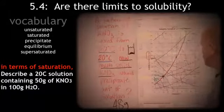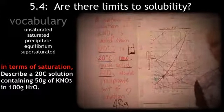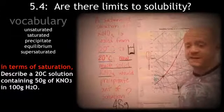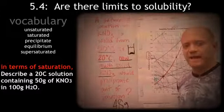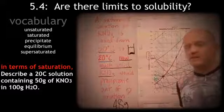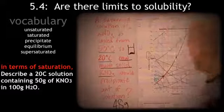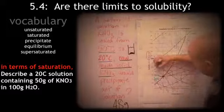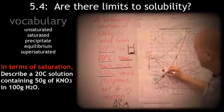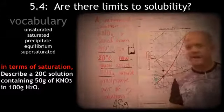One more example. If I have 50 grams of solute, 50 grams of potassium nitrate at 20 degrees Celsius. Again, 50 grams of potassium nitrate at 20 degrees Celsius. 50 grams, grams are here, at 20 degrees. Which type of solution is obtained?